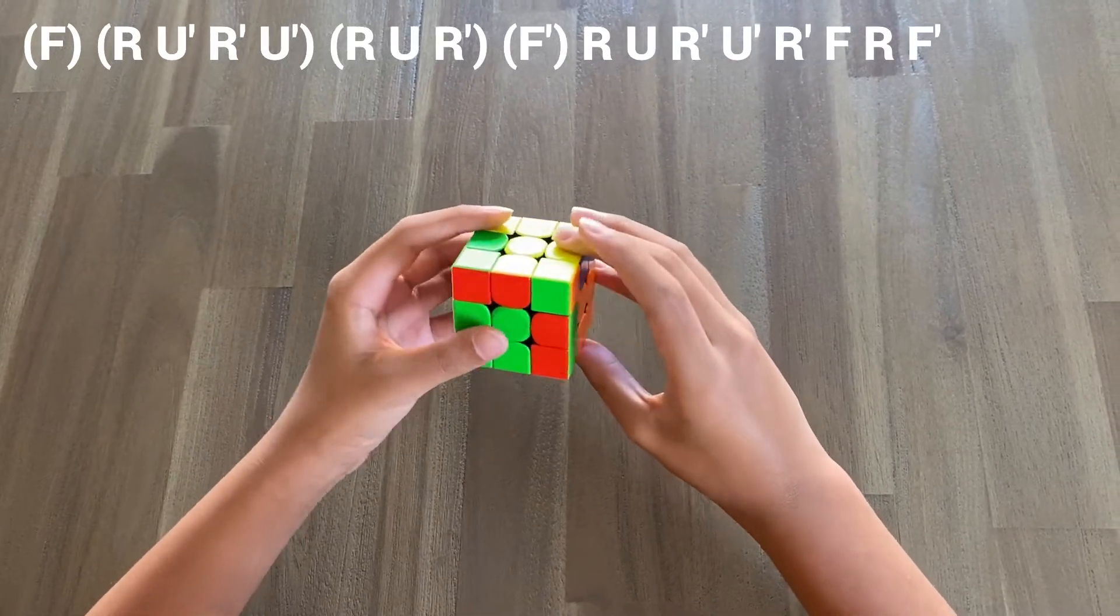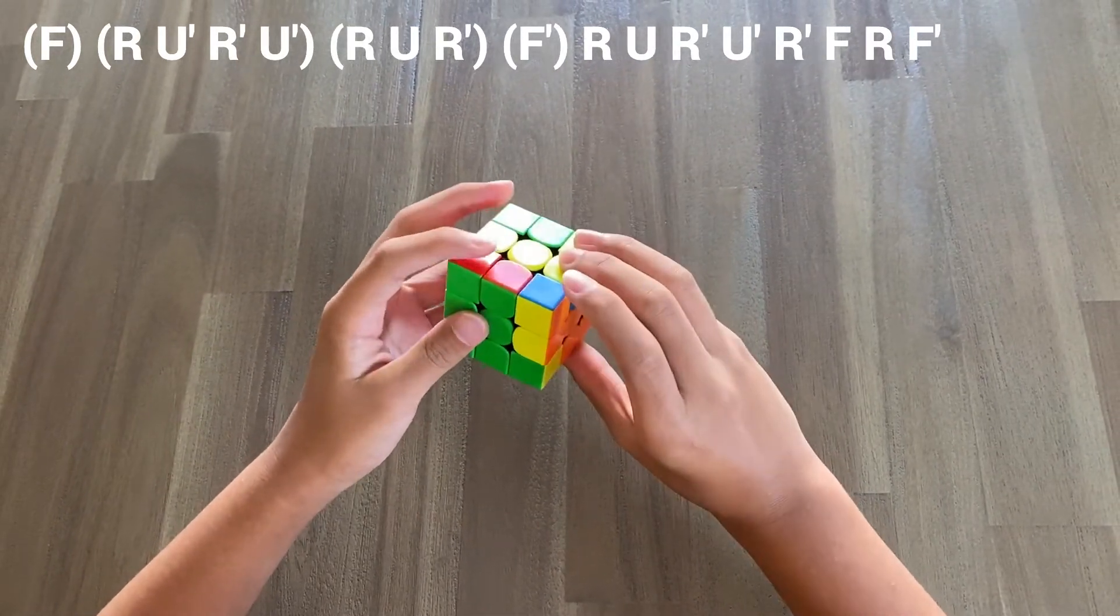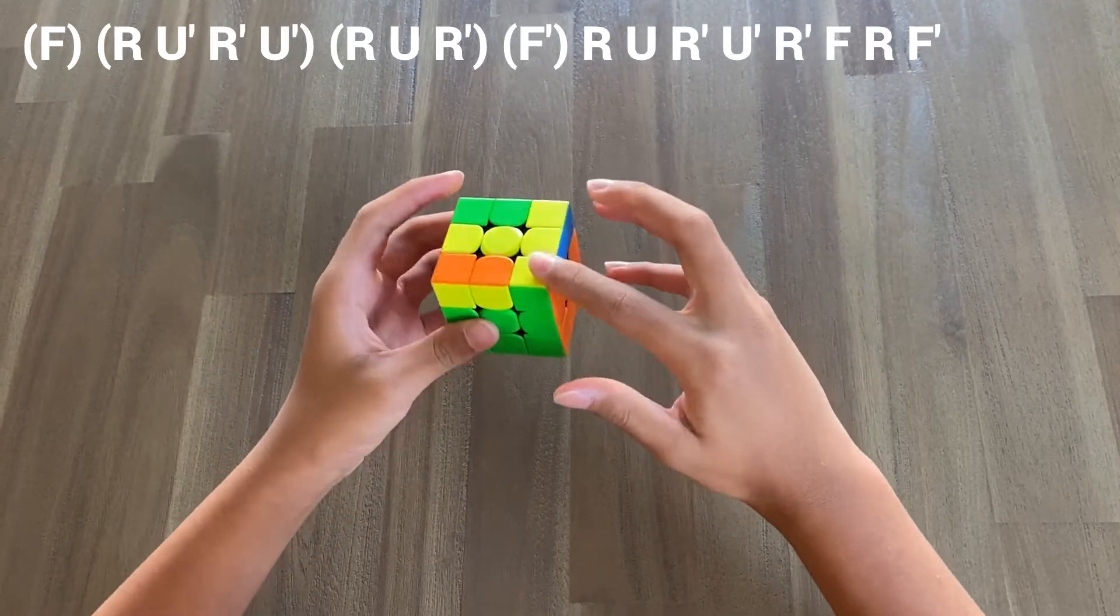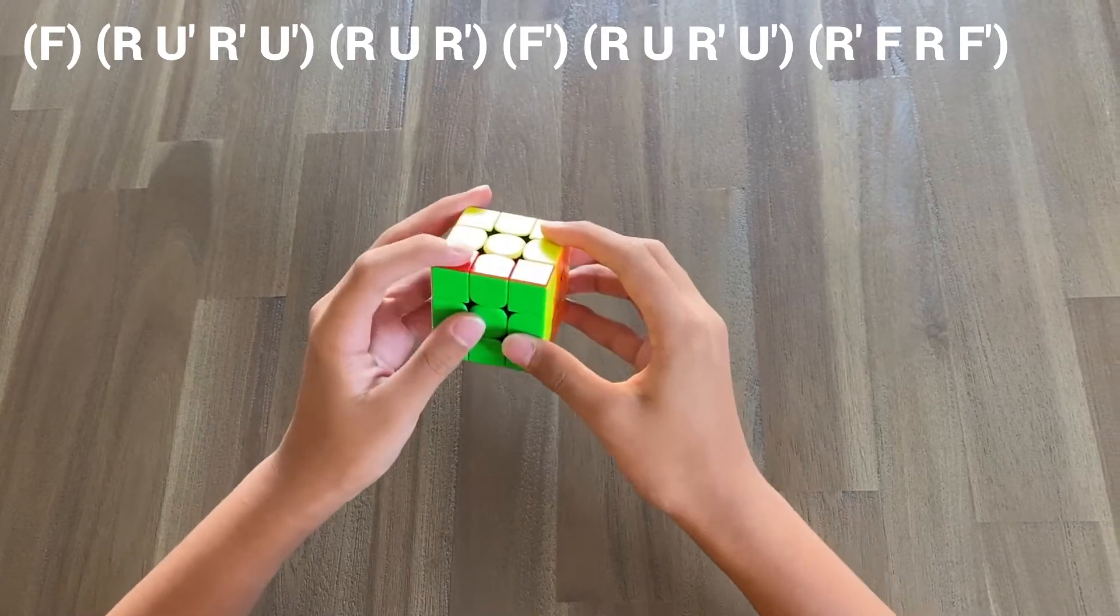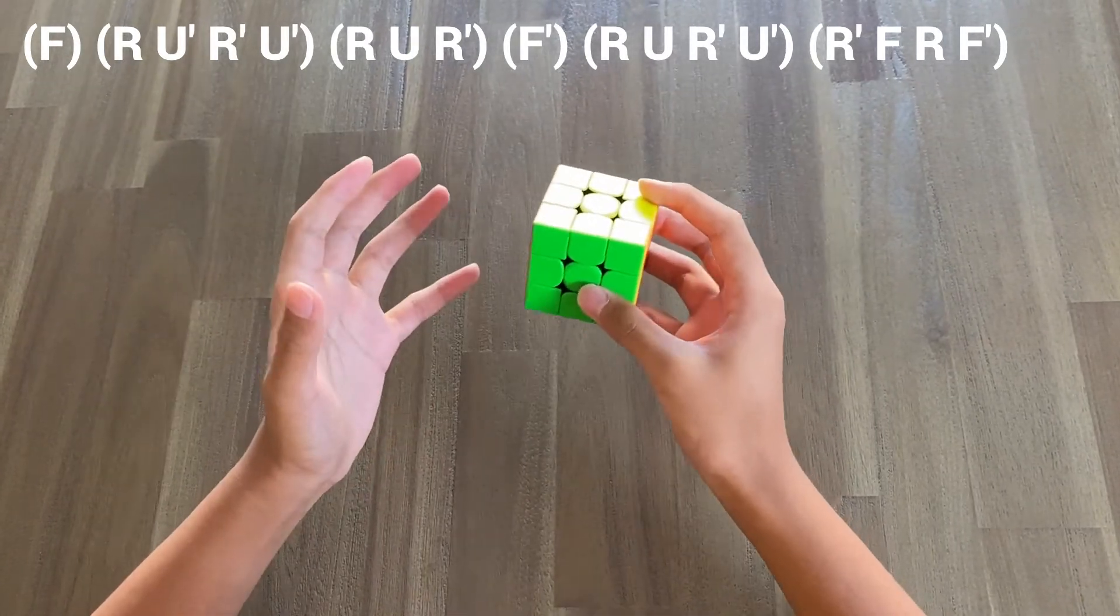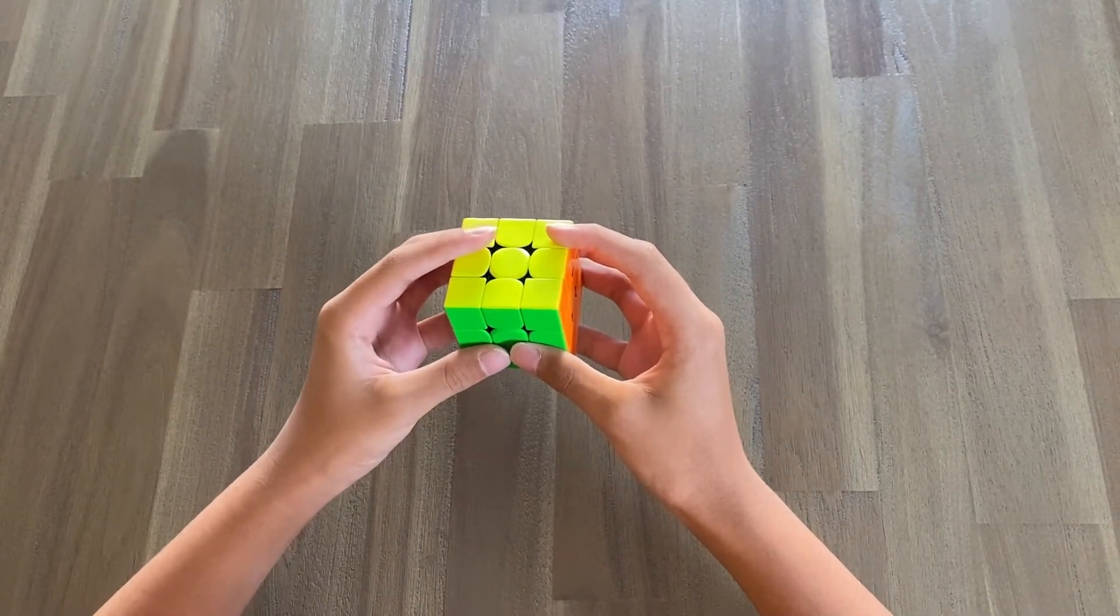Then, we have yet another trigger. And finally, we have that same TLL case, which we can do this. And as you can see, the Y perm is now broken down into different triggers.